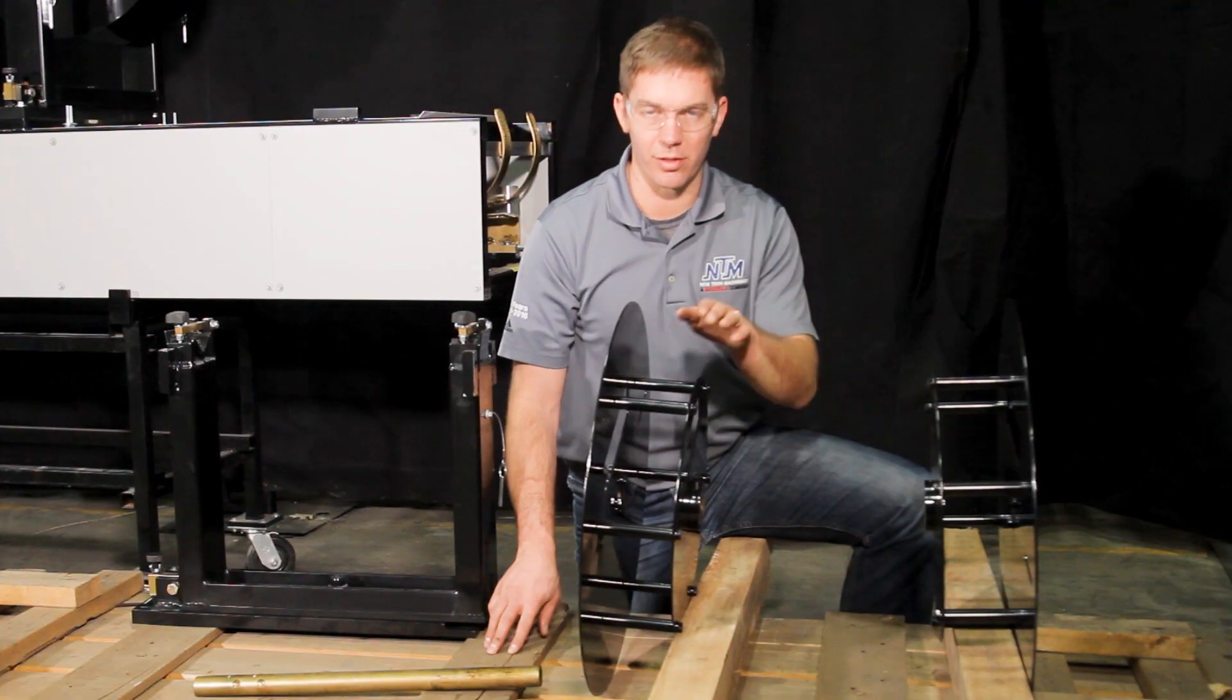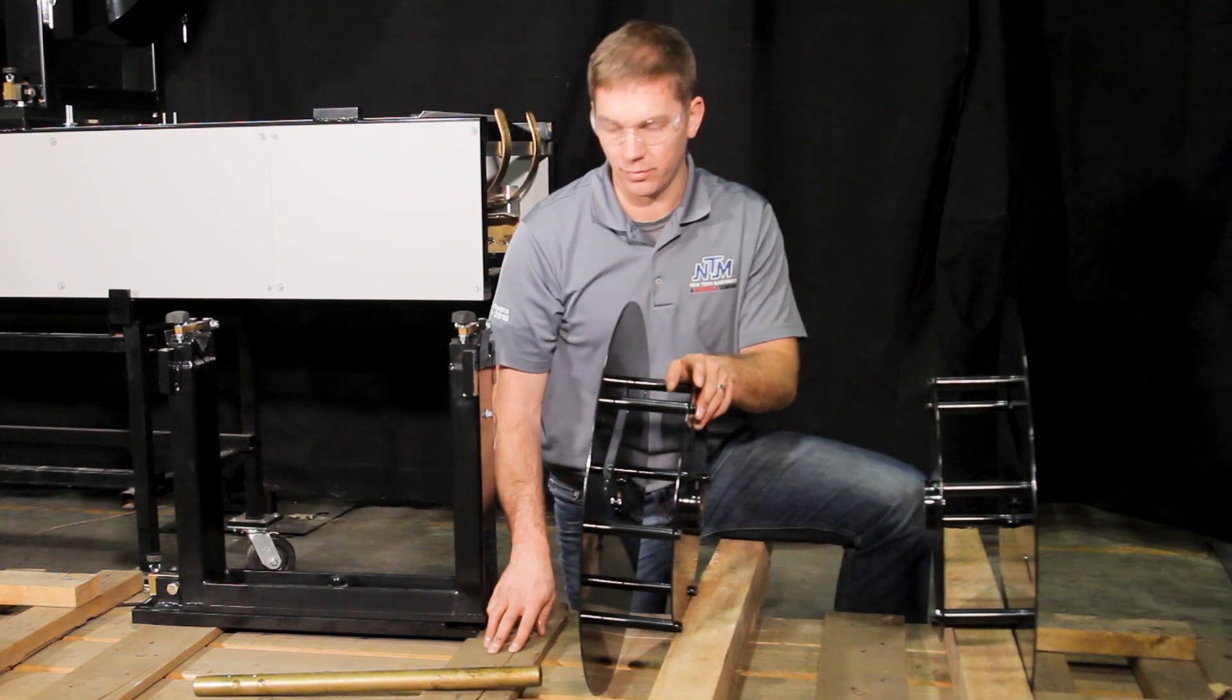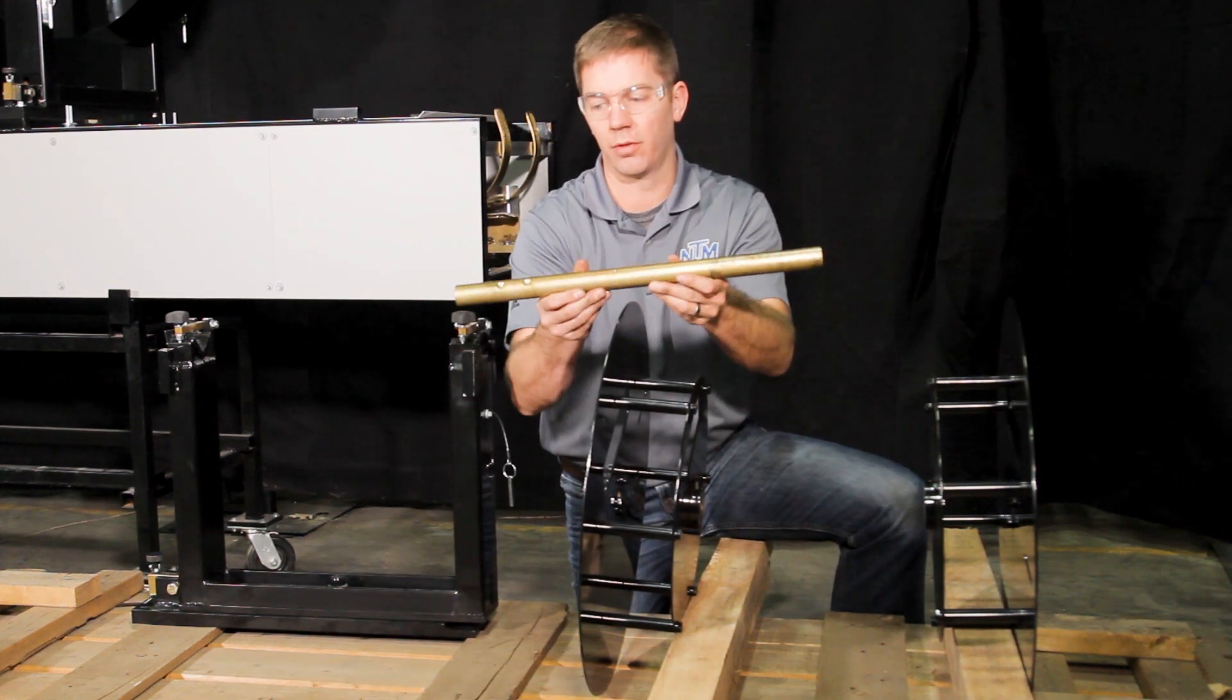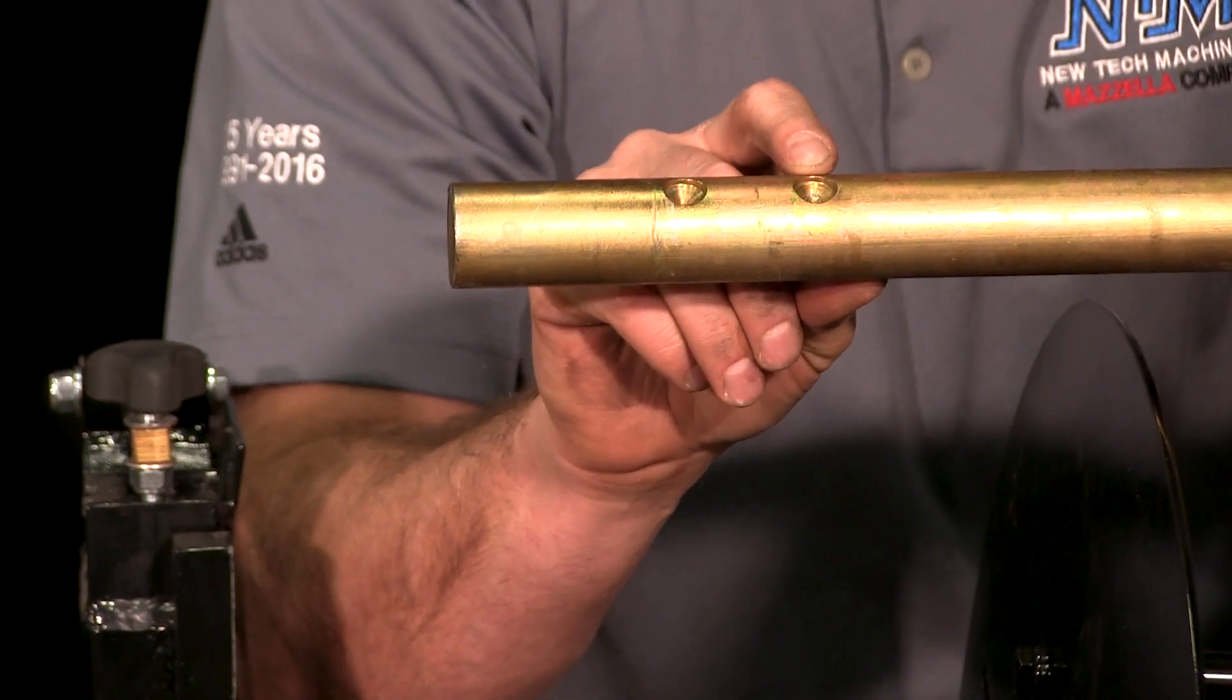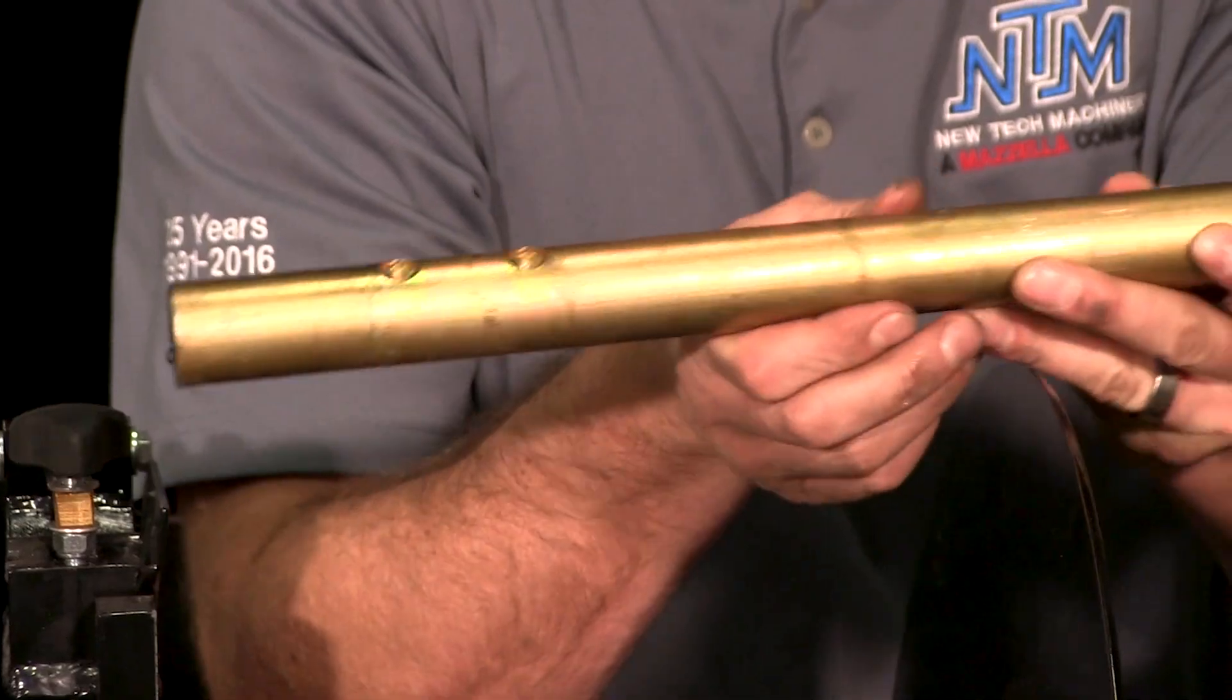To assemble the reel you want to start with the fixed half of the reel and the reel shaft and you want to make note that there are two location divots on the right side for five and six inch positions.